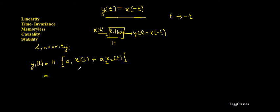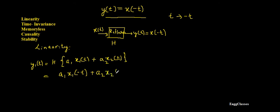So if the input is a1 x1 of t plus a2 x2 of t, what is the output? The coefficients a1 and a2 contain no t, so they remain as they are. x1 of t gets t replaced with minus t, giving x1 of minus t. Similarly, a2 is retained and x2 of t becomes x2 of minus t. So the output is a1 x1 of minus t plus a2 x2 of minus t. This is what I get in the first half of the linearity property.